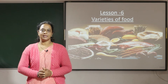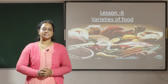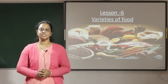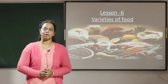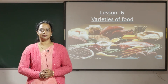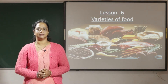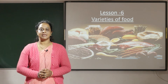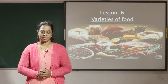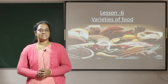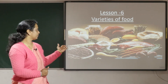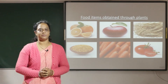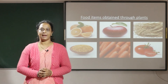Children, do you know that plants and animals are the main sources of food for all the organisms on earth? So which are the main sources? Plants and animals. Now let's see the food items which we obtain through plants.